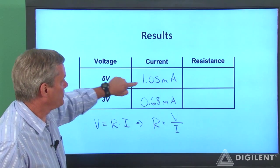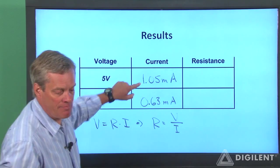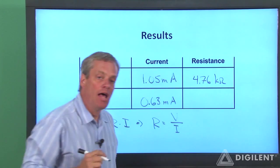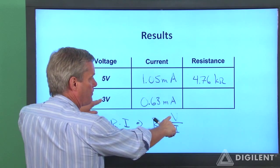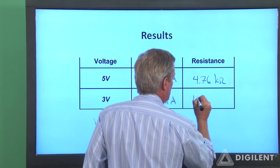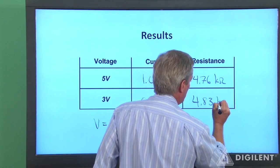If I take 5 volts and divide it by 1.05 milliamps, I get 4.76 kilo ohms. Likewise, when I apply 3 volts across this and measure 0.63 milliamps, that ratio turns out to be 4.83 kilo ohms.